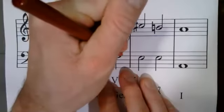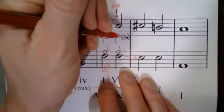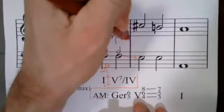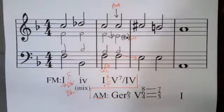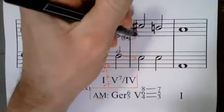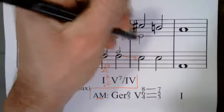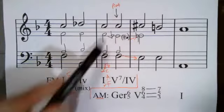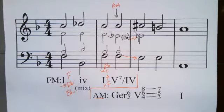So lowered scale degree six is here. That resolves like that. And now raised four in the key of A major is going to be D-sharp, which means that must go up. I'll write in a cautionary accidental there to show that that E-flat is becoming E-natural.